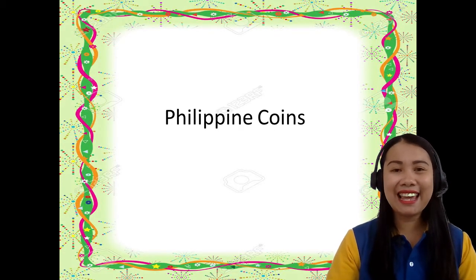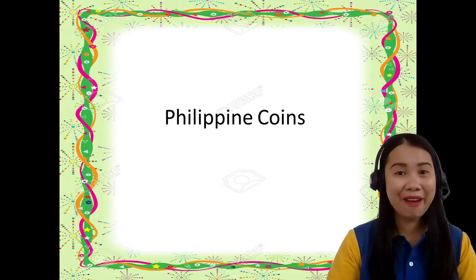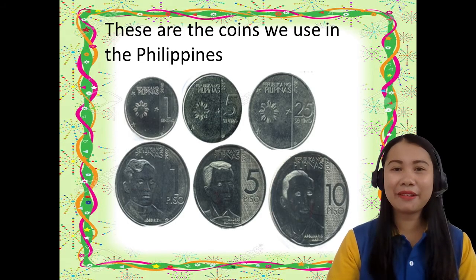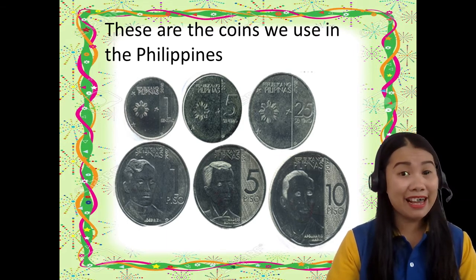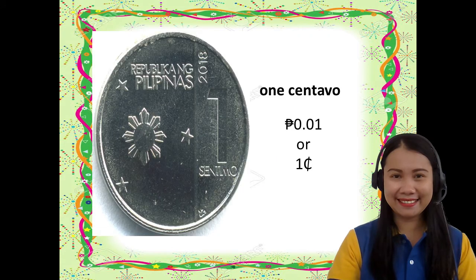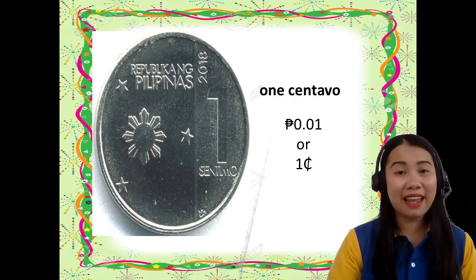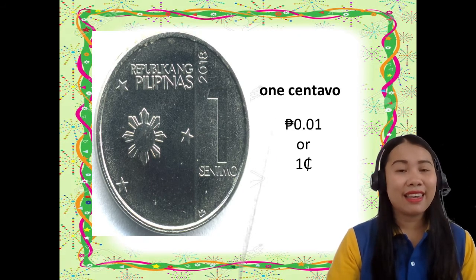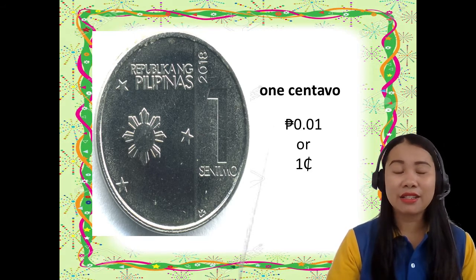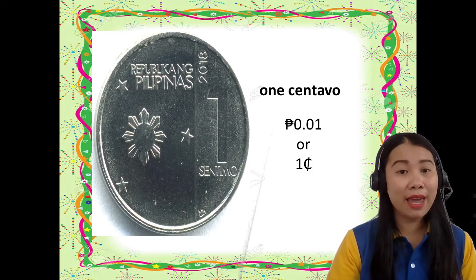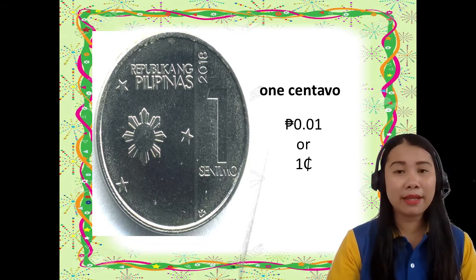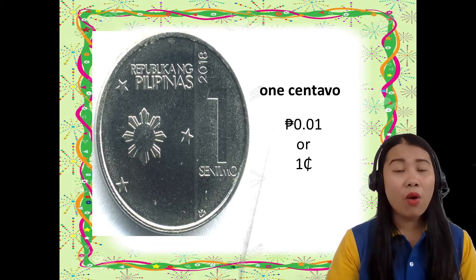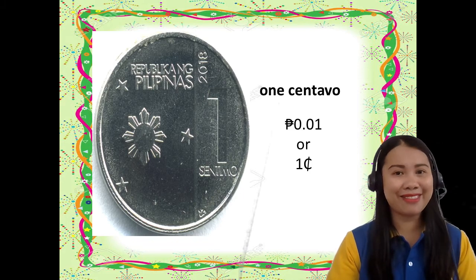These are the symbols we use to write the value of the Philippine money. Now, let's take a look at our Philippine coins. These are the coins we use in the Philippines. Can you name each coin? The first coin is one centavo. We also write it as: peso sign, zero decimal point zero one, or 1 and the centavos sign.